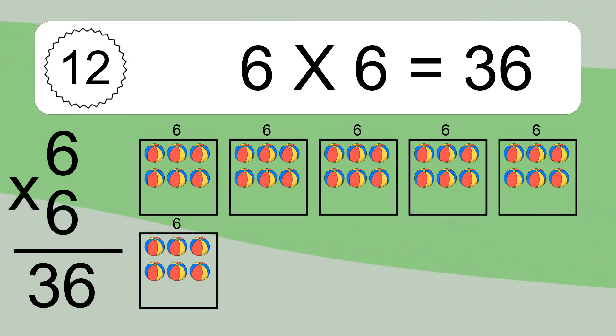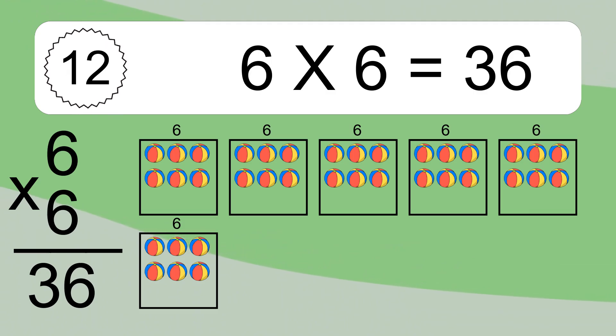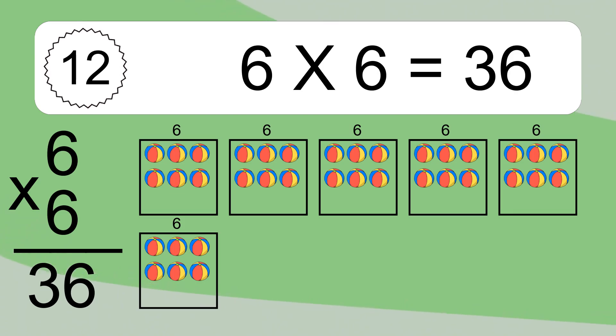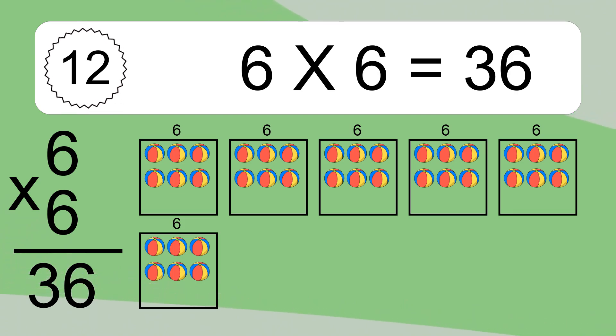and each box has 6 colorful balls inside. If you count all the balls in all the boxes together, you will have 6 times 6 balls. This equals 36 balls.